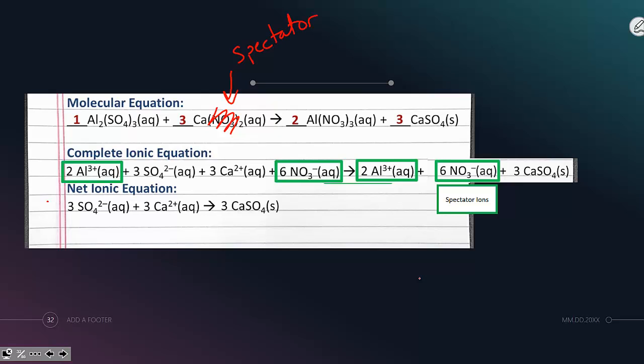And if we wrote out the complete ionic equation, sure enough, we end up with nitrate as a product and nitrate as a reactant and therefore they cancel one another out. They are a spectator.